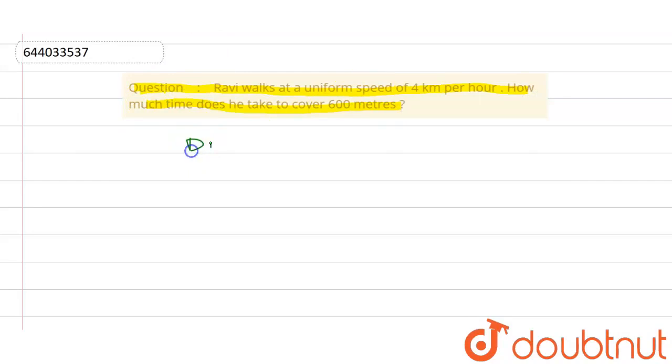We know the formula: distance equals speed multiplied by time. The speed given is 4 km per hour.